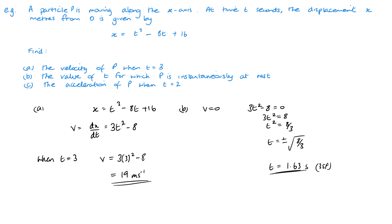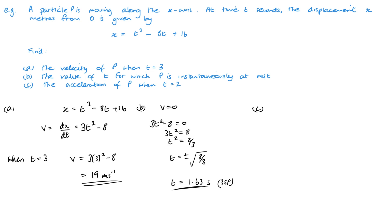For part c, we want the acceleration of P at t = 2. Acceleration is the rate of change of velocity, dV/dt, so we differentiate our velocity expression v = 3t² − 8. That gives a = 6t. Substituting t = 2: acceleration = 6 × 2 = 12 metres per second squared.